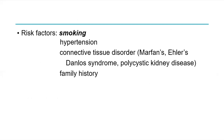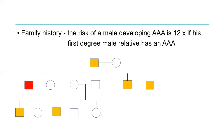The risk factors, as in all arterial disease: smoking is the strongest risk factor, followed by hypertension, connective tissue disorders such as Marfan's and Ehlers-Danlos, polycystic kidney disease, and family history. Importantly, if a male first-degree relative has an abdominal aortic aneurysm, other first-degree relatives have a 12 times greater chance of developing one. So please warn their first-degree male relatives to have an ultrasound scan when they reach the age of 50.